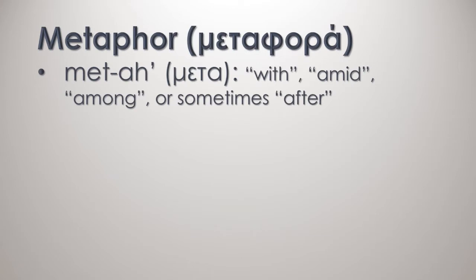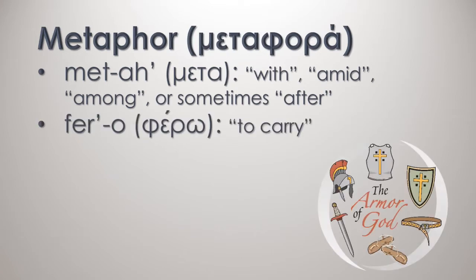The English noun metaphor comes from a compound Greek word made up of two smaller separate words. The first word is the preposition meta, which means with, amid, among, or sometimes after. And the second word is the verb pharo, which means to carry. So, linguistically, the word metaphor refers to conceptually placing two things side by side to learn something about one of the items through the features of the other.